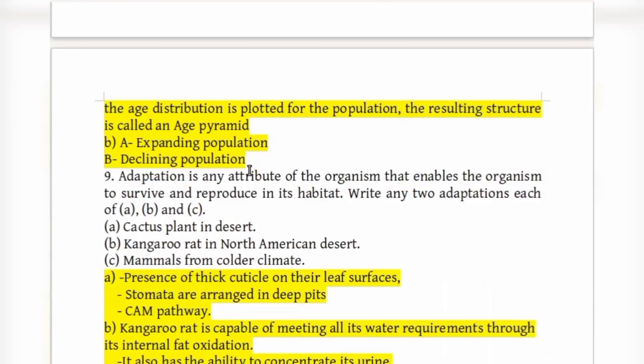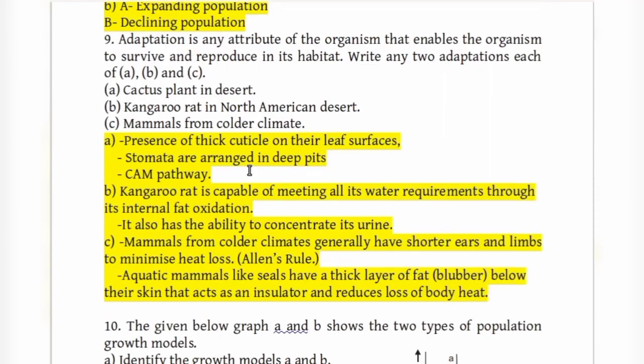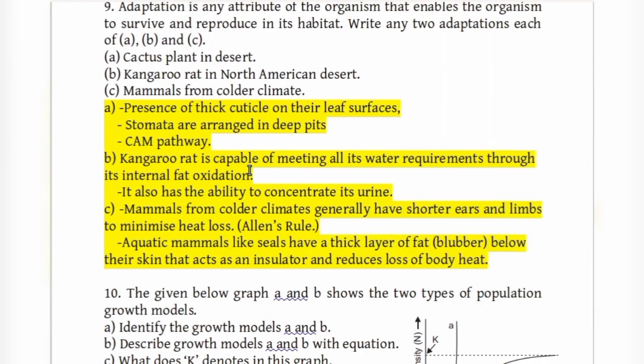Adaptation is any attribute of an organism that enables it to survive and reproduce in its habitat. The question asks for two adaptations each for: a cactus plant in the desert, a kangaroo rat in the North American desert, and mammals from colder climates.